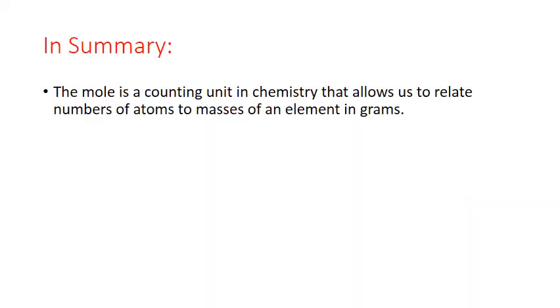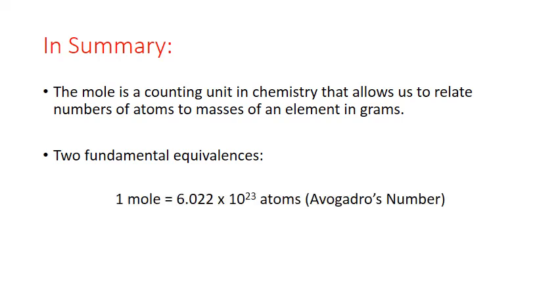In summary, the mole is the counting unit in chemistry that allows us to relate numbers of atoms to masses of an element in grams. There are two fundamental equivalences associated with it. One mole equals 6.022 times 10 to the 23rd atoms, which is known as Avogadro's number. And one mole equals the periodic table mass of the element in grams per mole, which is known as the molar mass.